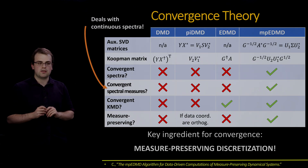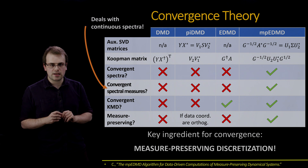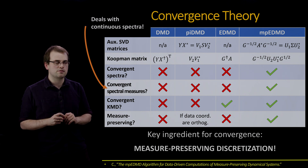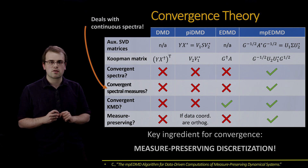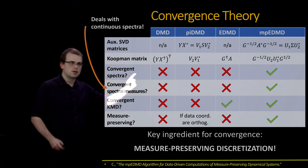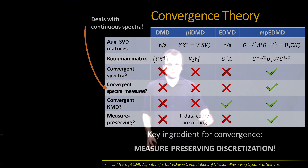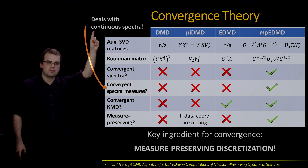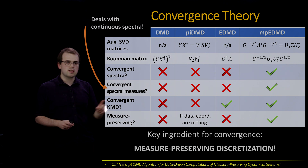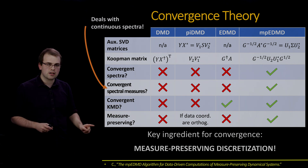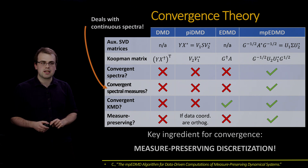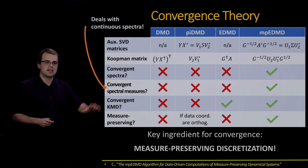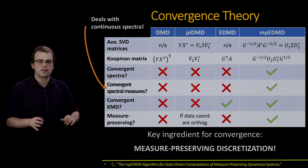A summary of the convergence theory — consult the paper for theorems and proofs. Using measure or structure preservation, you can prove nice properties of MPE-DMD: convergent spectra (the first Galerkin method to achieve this), convergent spectral measures for handling continuous spectra, a convergent Koopman mode decomposition, and measure preservation even when data is not collected in an orthogonal basis. The key ingredient is the measure-preserving discretization.